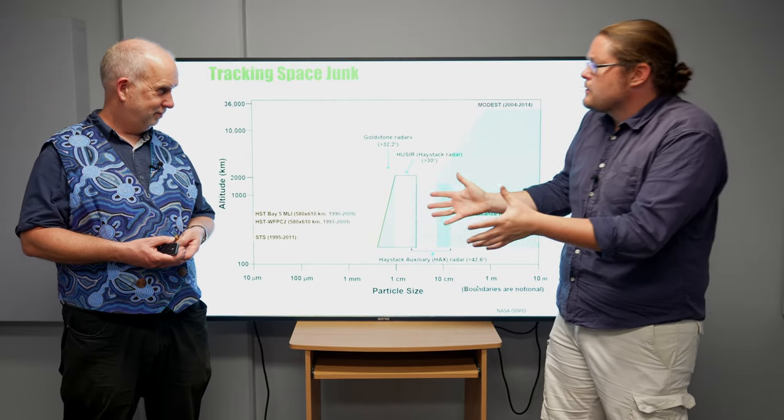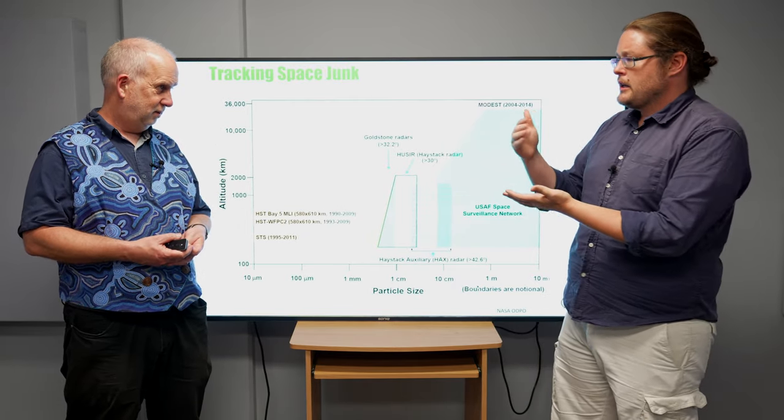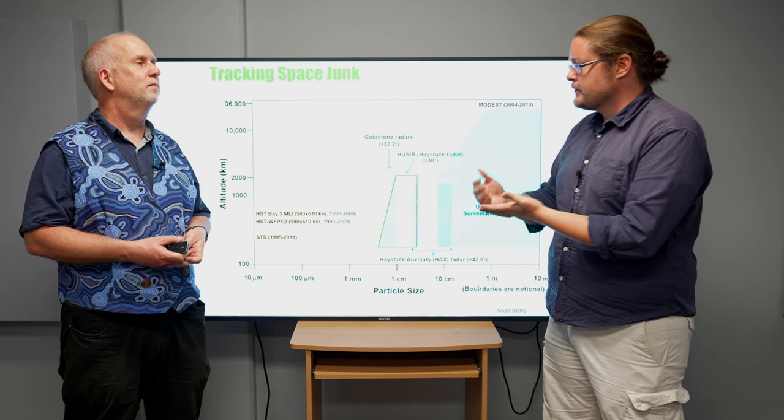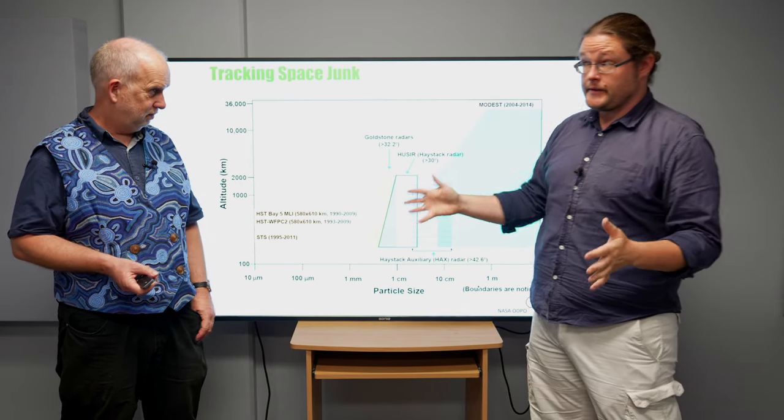We saw that there's different categories of how much we know based on sizes. So how do we actually firstly find and track these things?